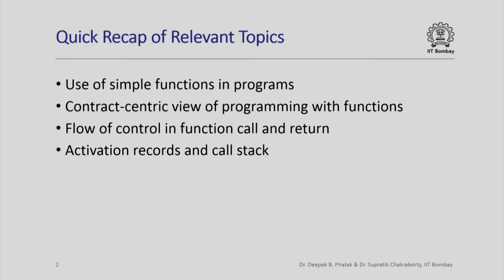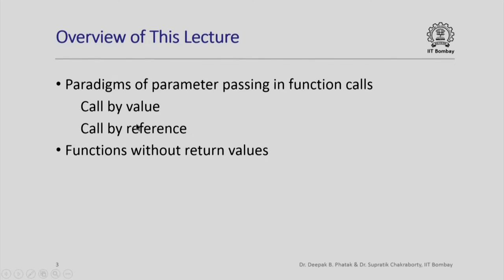Here is a quick recap of some of the relevant topics we have already studied. We have seen the use of simple functions in programs, the contract-centric view of programming with functions, how control flows when a function call happens and when it returns, and the use of activation records and call stack to implement this flow of control. In this lecture we are going to look at two predominant paradigms of parameter passing — call by value and call by reference.